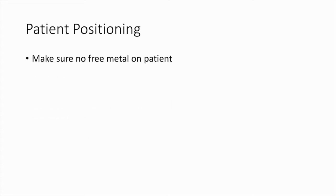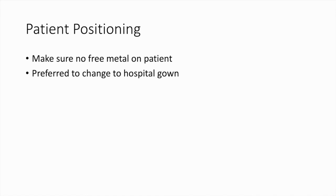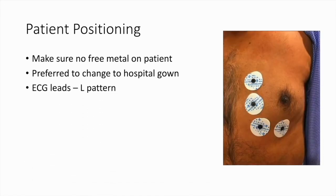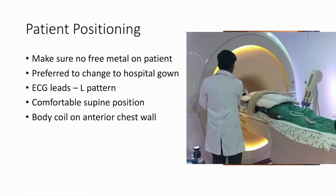For patient positioning, make sure there is no free metal on the patient by using a metal detector. It is always preferable to change to a hospital gown. Use graphite leads for ECG. There are different configurations of lead placement, and the L configuration has been found to be most efficient. Make sure the patient is in the supine position and is comfortable with the body coil on the anterior chest wall, with no air gap between the coil and chest wall especially in thin patients.